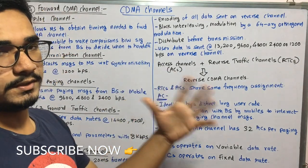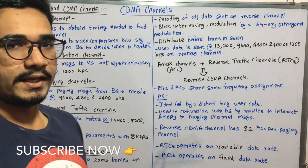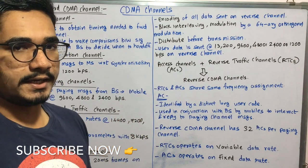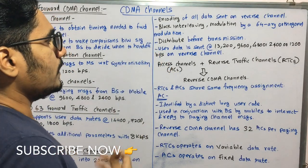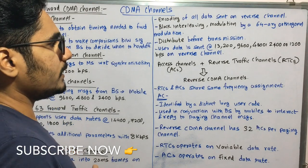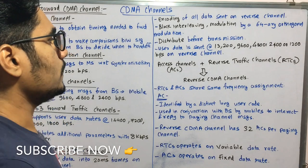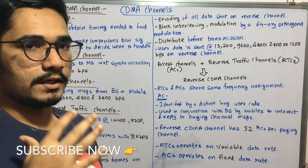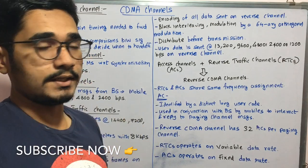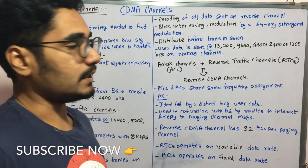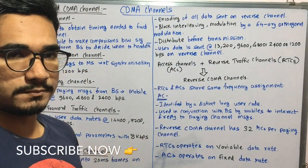Modulation is then performed using 64-array orthogonal modulation, following the IS-95 standard principle. It also spreads the data evenly before transmission. On the reverse CDMA channel, user data is sent at rates of 13200, 9600, 4800, 2400, or even 1200 bits per second.